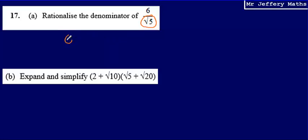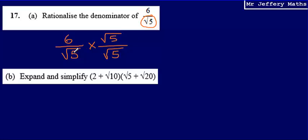The way we're going to do this is we're going to take 6 over root 5 and multiply it by the square root of 5 over the square root of 5 — that is, the denominator over itself. This means we're essentially multiplying by 1, so the value of the fraction is not going to change.